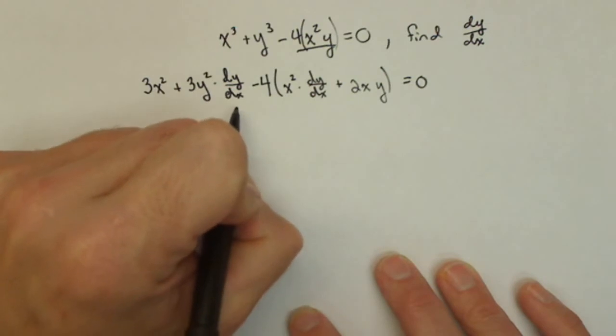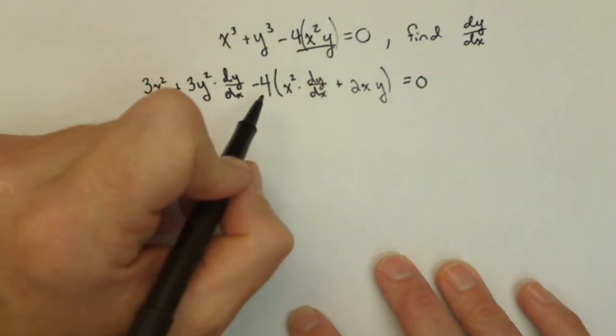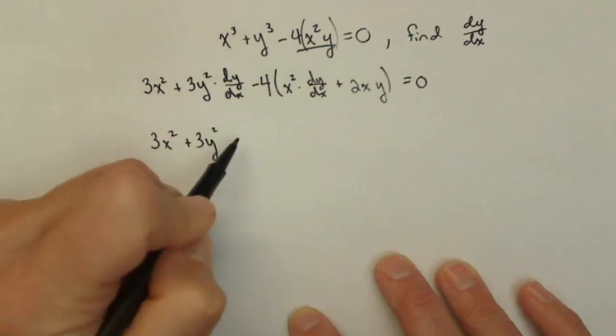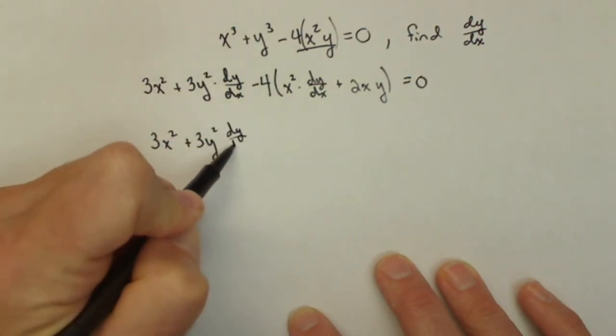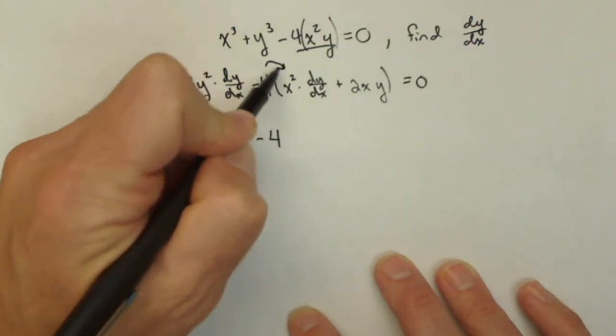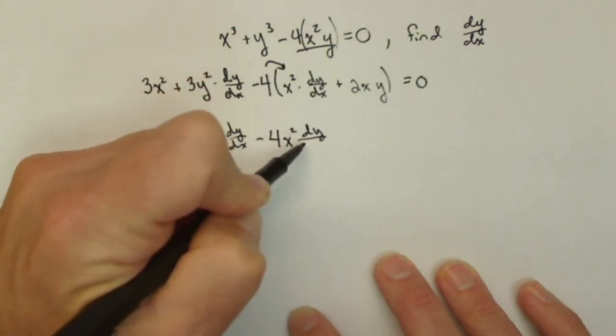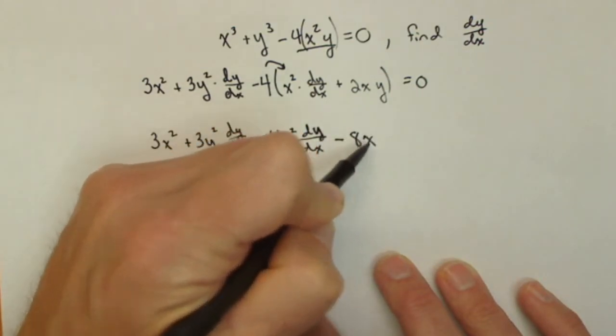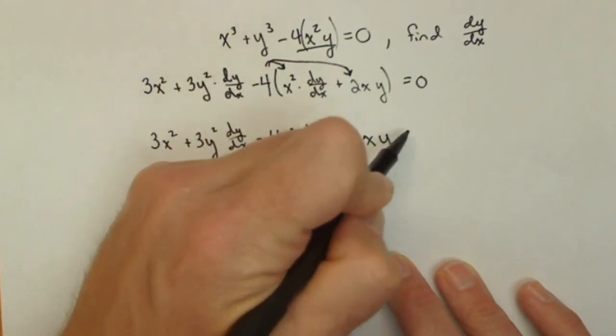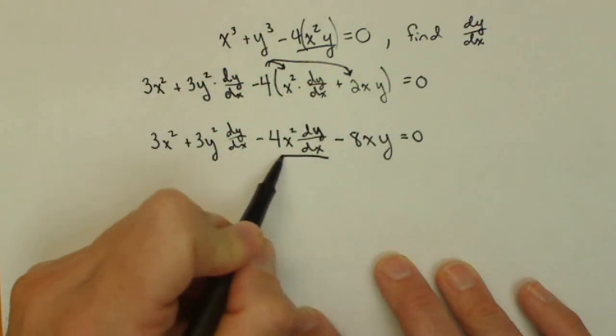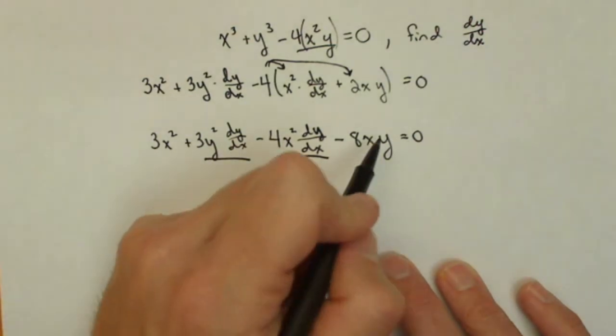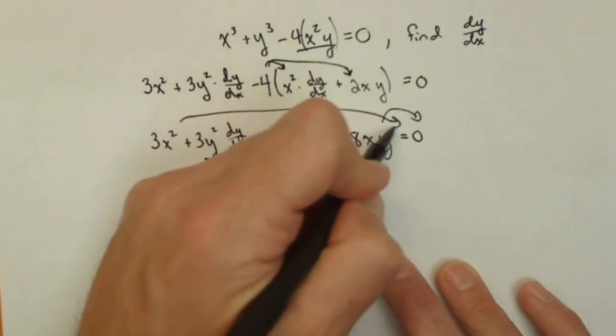Now, we want to get every term with a dy/dx in it on one side and every term without on the other. So I'm going to just need to distribute this minus 4 to be able to move things around. So 3x² + 3y² dy/dx - 4x² dy/dx - 8xy equals 0. Now, this term and this term I'm going to leave on the left-hand side here. These two terms I'm going to move over to this side.